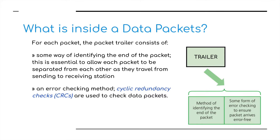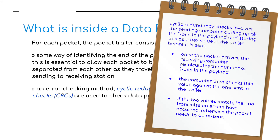The final part is the trailer. The trailer contains two important pieces of information. First of all, there's some way of identifying the end of the packet, to confirm everything has been received. And most importantly, some kind of error checking method. I've noted here cyclic redundancy checks — CRCs — which are used to check the data. It involves the sending computer adding up all the one-bits in the payload and storing them as a hexadecimal value in the trailer. Once the packet arrives, the receiving computer calculates the number of one-bits in the payload and checks this value against the one stored in the trailer. If the two values match, then there has been no error and there's no reason to request the resending of that information.